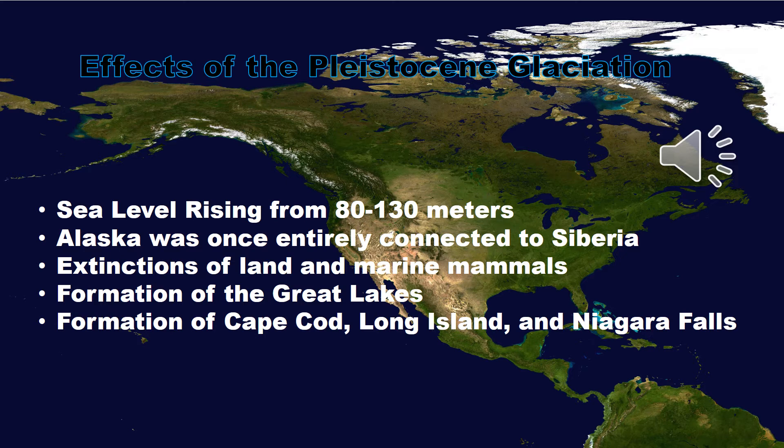Another effect is that Alaska was once entirely connected to Siberia. The Bering Land Bridge, also known as the central part of Beringia, is thought to have been up to 600 miles wide, based on evidence from sediment cores drilled into the now submerged landscape. Now it is reduced to the Bering Strait.